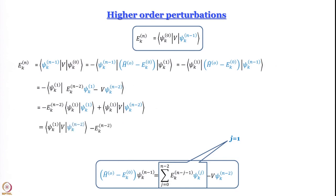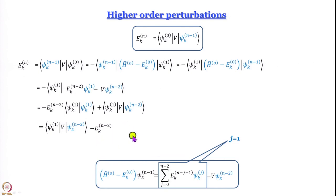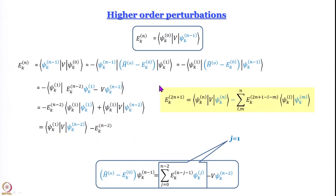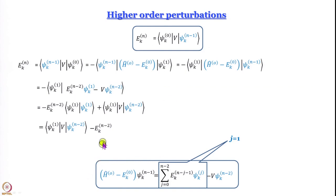I have two integrals: in the ket vector there are two terms, so I write it as a sum of two integrals. For the first integral I can bring E_k^{n-2} out of the integral sign, and the integral becomes ⟨ψ_k^1|ψ_k^1⟩, which equals 1 by orthonormality. So I am left with E_k^{n-2} plus the integral ⟨ψ_k^1|v|ψ_k^{n-2}⟩. What I have got is that if you have the (n-2)th correction to the energy, then you can find out the nth correction to the energy.